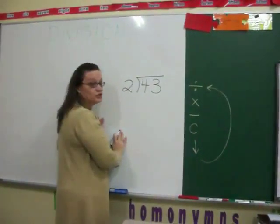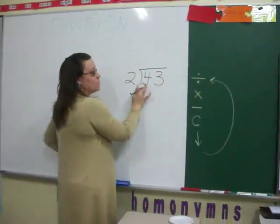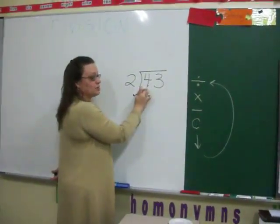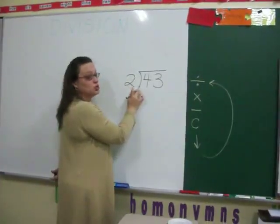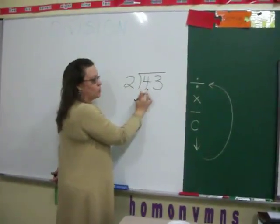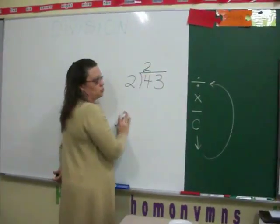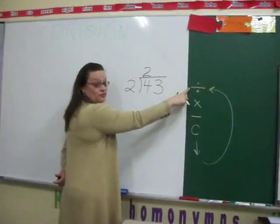What do I do first? I divide. 4 divided by 2. Remember, I always start with the number closest to the door of my house. 4 divided by 2 equals 2. What do I do after I divide?